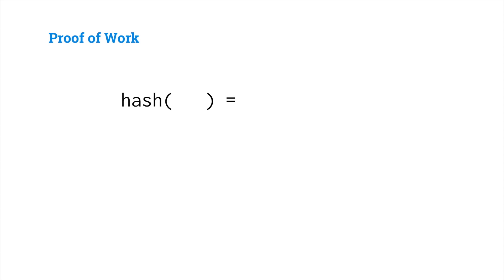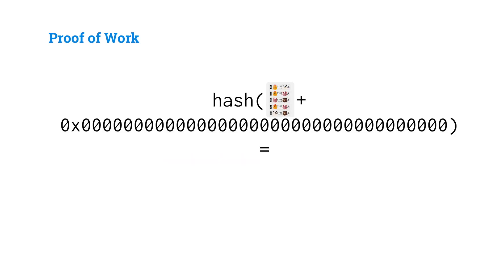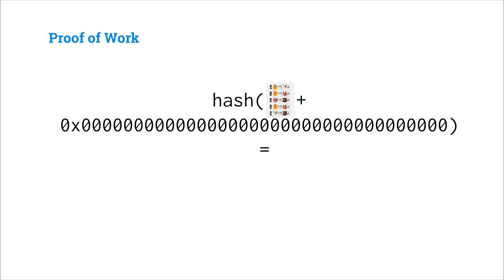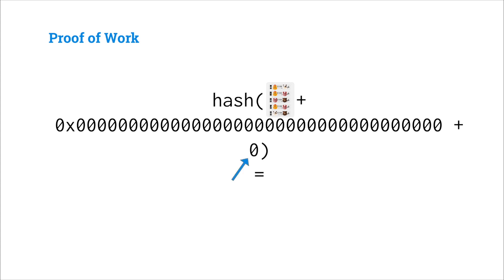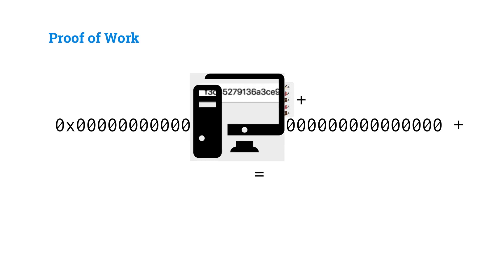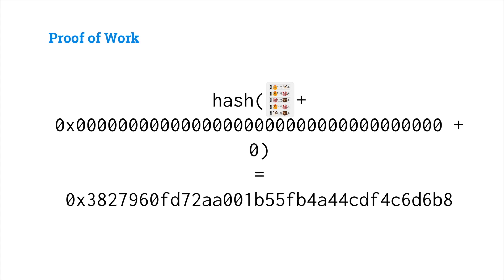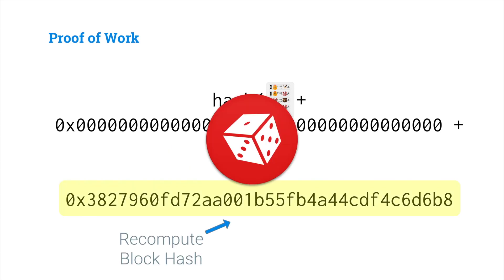Back to proof of work. From last lecture, we compute a block hash by hashing all the transactions of a block together with the previous block hash — in this case the zero hash because this is the first block. But now we're going to add a third input called a nonce, which is just a nonsense number. We compute the hash and get an output like 3827. If we increment the nonce and recompute the block hash, it's like rolling a die — we have no idea if the new hash will be larger or smaller. We're generating a new pseudo-random number.